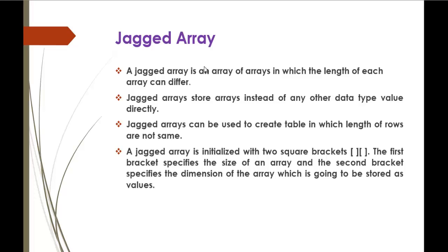A multidimensional array is a collection of values stored in the form of a matrix — for example, 3×2 or some other type — where values are stored in rows and columns. But a jagged array is itself a collection of arrays where the length of each array can differ. Jagged arrays store arrays instead of direct data values, and can be used to create tables where the lengths of rows are not the same.